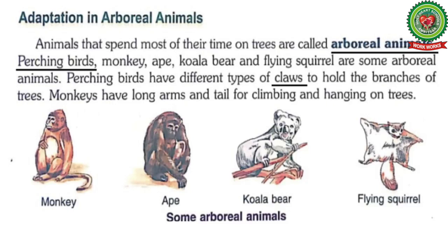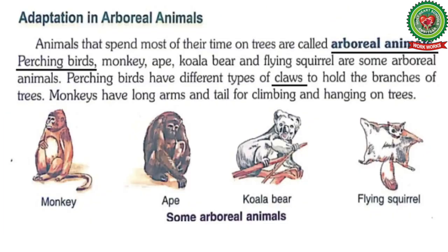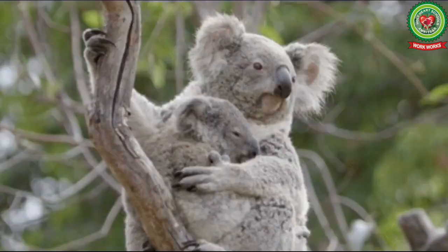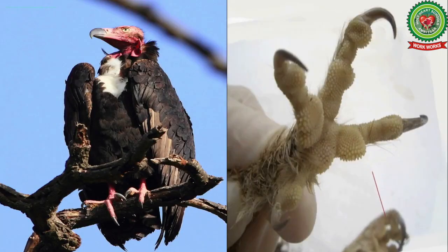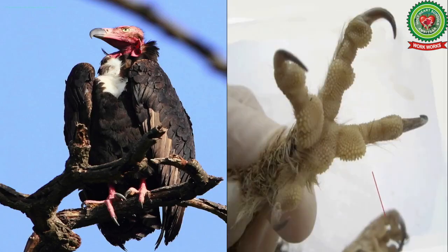Now, adaptation in arboreal animals. Underline the words 'arboreal animals'. The definition of arboreal animals is: animals that spend most of their time on trees. The examples of arboreal animals are perching birds, monkey, ape, koala bear, and flying squirrel.